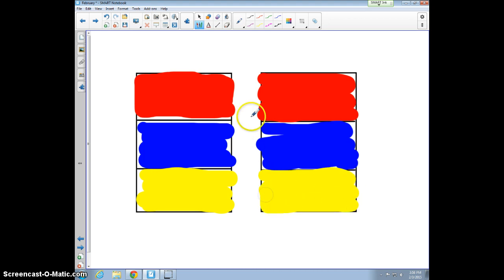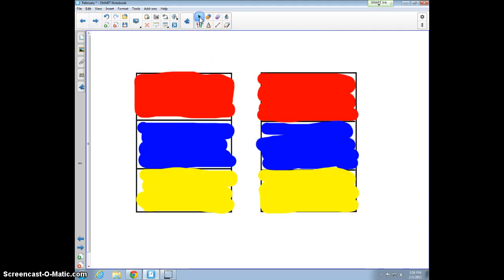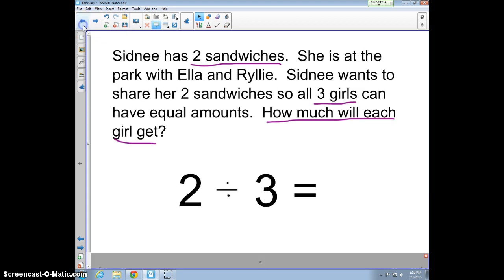So you can tell here, remember the question, the story problem is, how much will each girl get? So you can tell that here's Sydney, and so she gets one-third, two-thirds. Ella gets one-third, two-thirds. And Riley gets one-third, two-thirds. So each girl will get two-thirds of a sandwich.